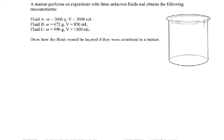Fluid B has a mass of 672 grams and 850 millilitres. And finally fluid C has a mass of 990 grams and a volume of 1,100 millilitres.